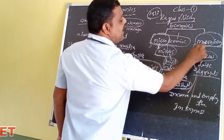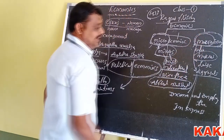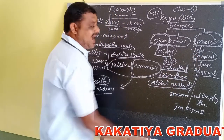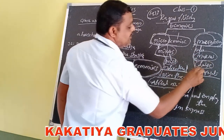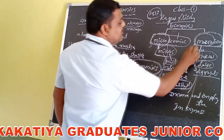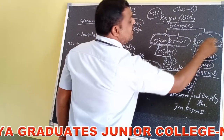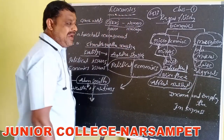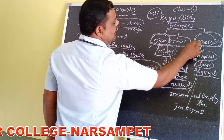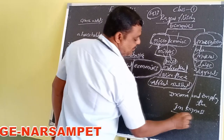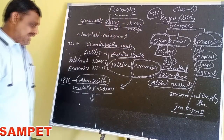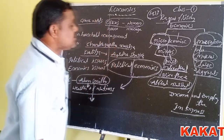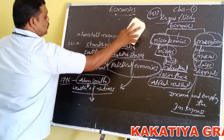Macroeconomics — the prefix macro is derived from the Greek word makros meaning large. Macroeconomics is the study of the aggregate, where aggregate means total. Macroeconomics was developed by J.M. Keynes. Now we will look at some goods in economics.